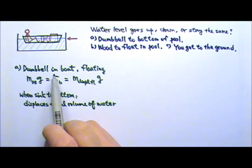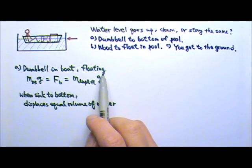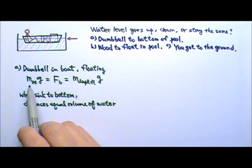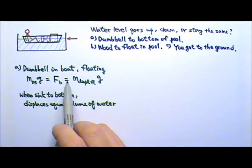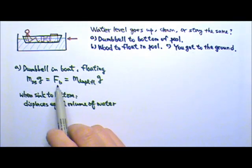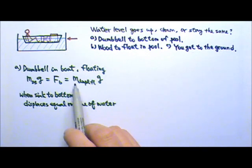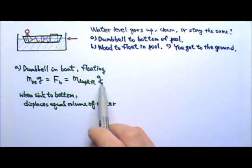A. When the dumbbell is in the boat, it is floating. That means the mg of the dumbbell gets balanced by the buoyant force. And the buoyant force, of course, equals the mass of the displaced fluid times g.